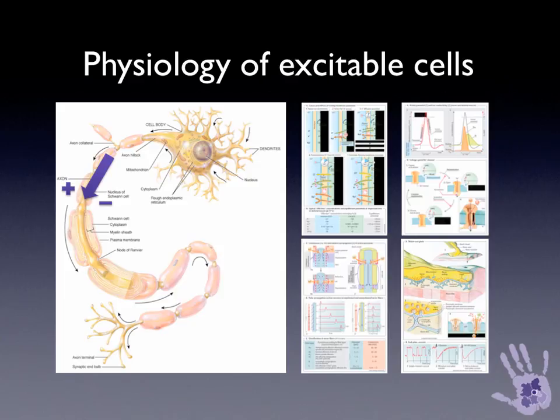The depolarization at the end plate — in this case a motor end plate — allows release of neurotransmitters across the synaptic cleft to receptors on the muscle.